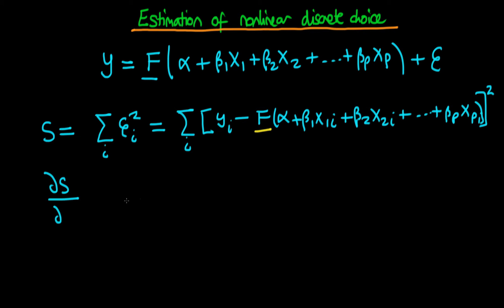If we were looking to estimate beta_1, we would differentiate this expression with respect to beta_1. We should be looking at the estimated parameters because we don't know the true ones. So we differentiate with respect to our estimate beta_1_hat. Doing that we get a minus 2 — the 2 comes from differentiating the squared term, and the minus from the minus sign.